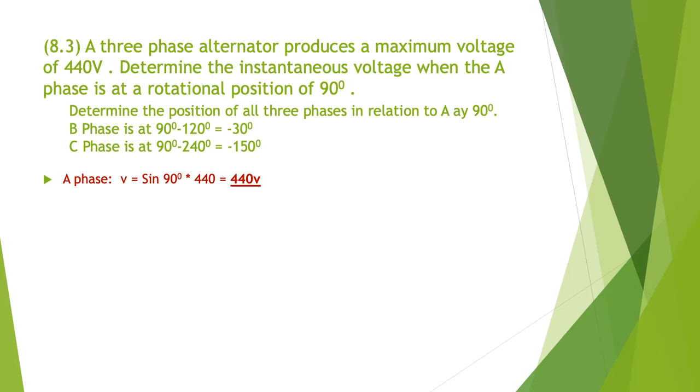We're going to use sine. Remember sine gives us the instantaneous value. So A phase is V equals sine 90 multiplied by 440, because they gave us the maximum voltage, and it comes out at 440 volts.